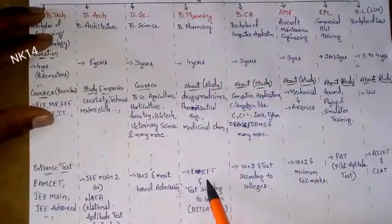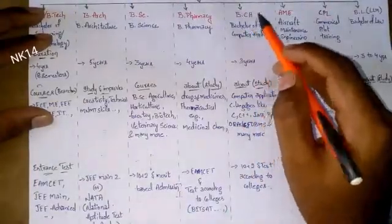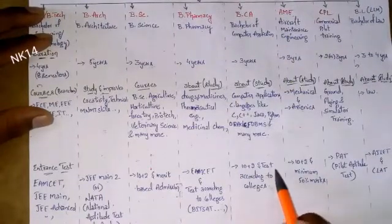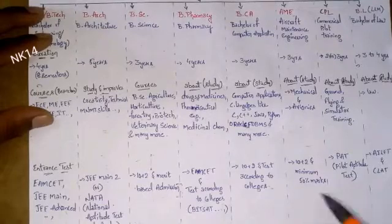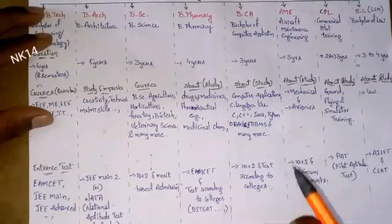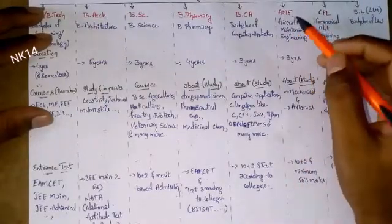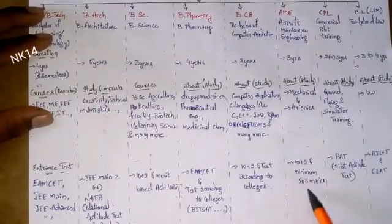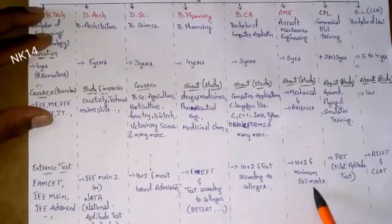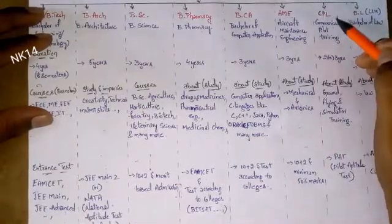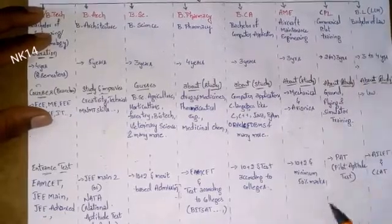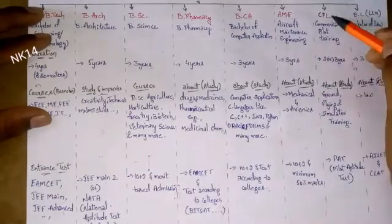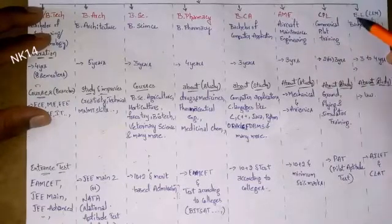For BCA — Bachelor of Computer Applications — there is no entrance test; you just need to pass 12th with minimum marks, and the college may keep their own test if required. For AME there is no entrance test — you just need to pass 12th with a minimum of 50 percent marks. For CPL — Commercial Pilot Training — you need to pass the PAT, which means Pilot Aptitude Test. If you pass this exam, you are eligible for CPL training.